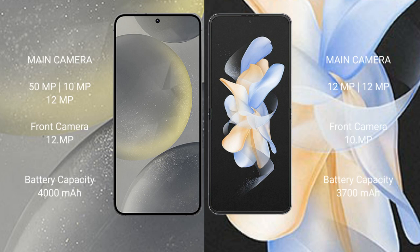The Samsung S24 features a triple rear camera setup of 50MP plus 29MP plus 12MP, and a 12MP front camera. The Samsung Galaxy Z Flip 4 features a dual rear camera setup of 12MP plus 12MP, and a 12MP front camera.